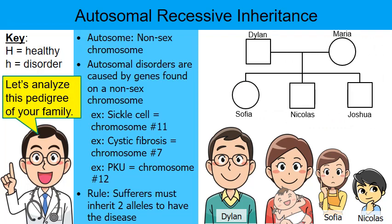Looking at this pedigree, squares represent males and circles represent females. We already know Mr. and Mrs. Henderson are heterozygous. One way to symbolically show this in a pedigree is to partially color in the square and circle for Dylan and Maria — that means they're carriers and heterozygous. Since each of them passed a recessive allele to baby Joshua, he has the disorder. In a pedigree, we fully color in the circle or square of individuals who have the disorder.